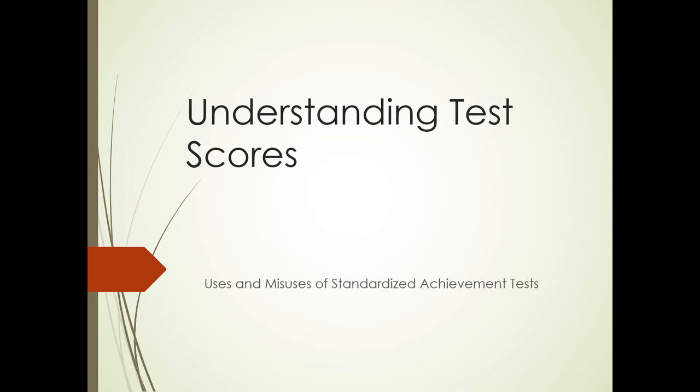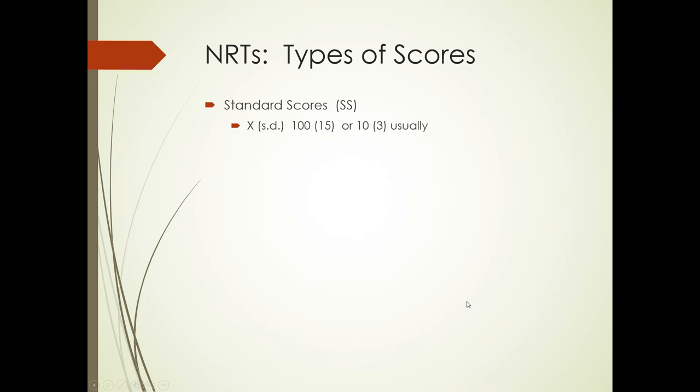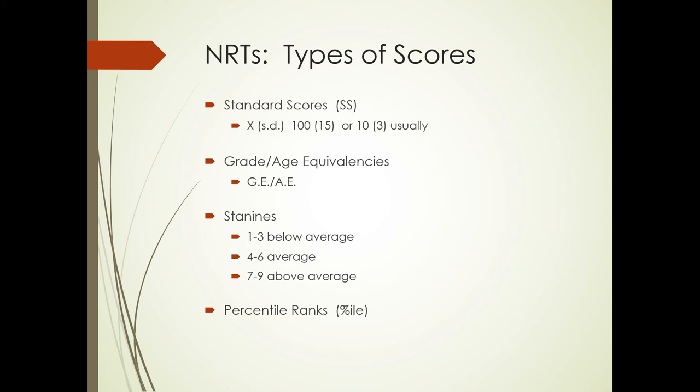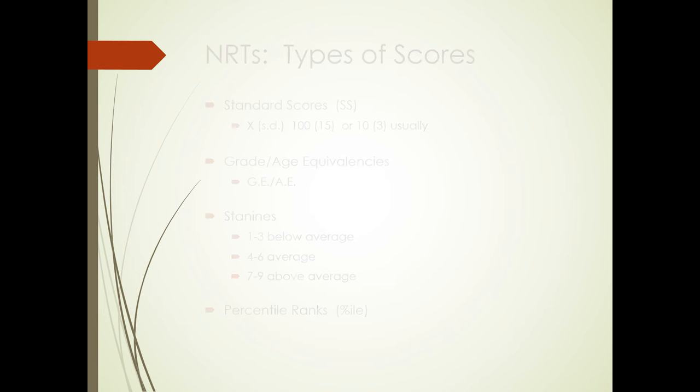So let's talk about understanding the test scores that you get. There are uses and there certainly are misuses of test scores. Let's talk first about the kinds of scores you get from a norm reference test. There are standard scores. The mean of 15 or the mean of 10 and 3 with a standard deviation of 3 are usually the standard scores that are reported. I'll show you in just a minute what that actually means on a graph. They almost always also report grade and age equivalencies. And I'm going to caution you against the use of these, as you will see a little later on. And they also often report stanines or standard divisions into 9 divisions. 1 to 3 is below average, 4 to 6 is average, and 7 to 9 is above average. Then they also report percentile ranks.